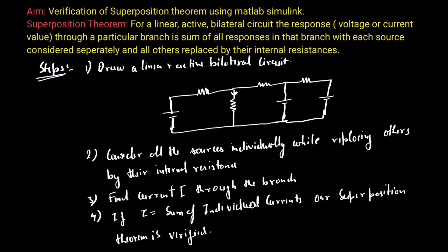Verification of superposition theorem using MATLAB Simulink. The superposition theorem states that for a linear active bilateral circuit, the response — either voltage or current — to a particular branch is the sum of all the responses in that branch with each source considered separately, while all other sources are replaced by their internal resistances.